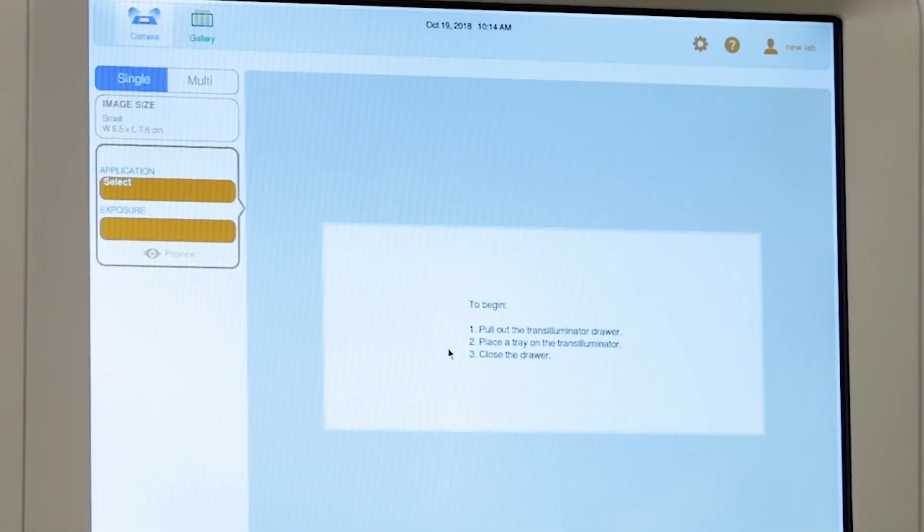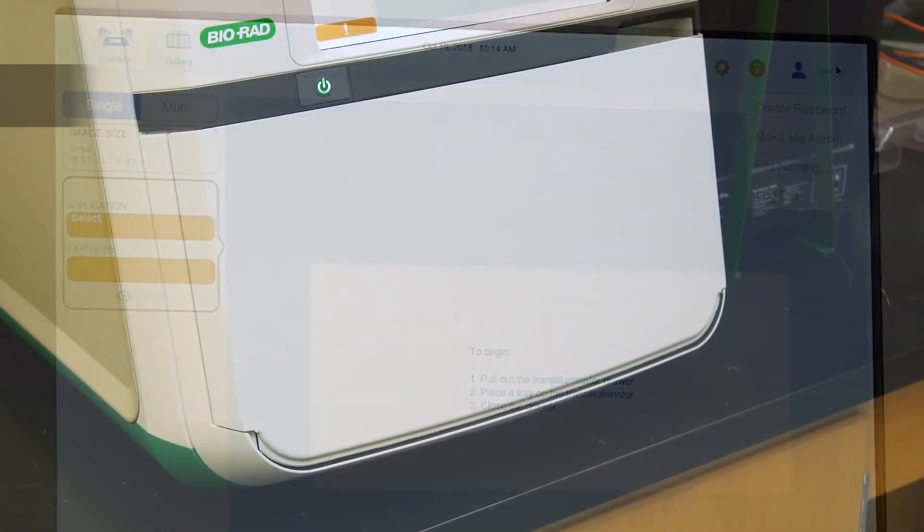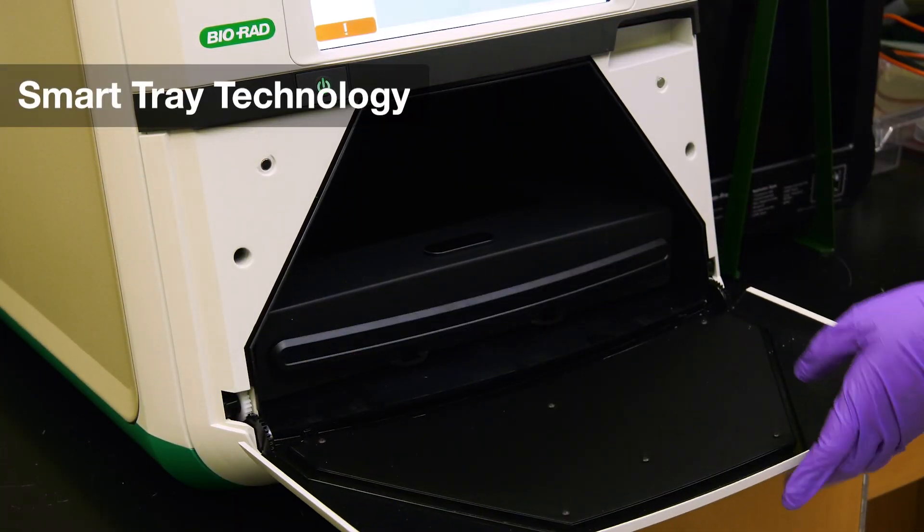Administrative controls can be set by clicking the person icon in the top right-hand corner. To begin, open the imager and pull out the transilluminator.